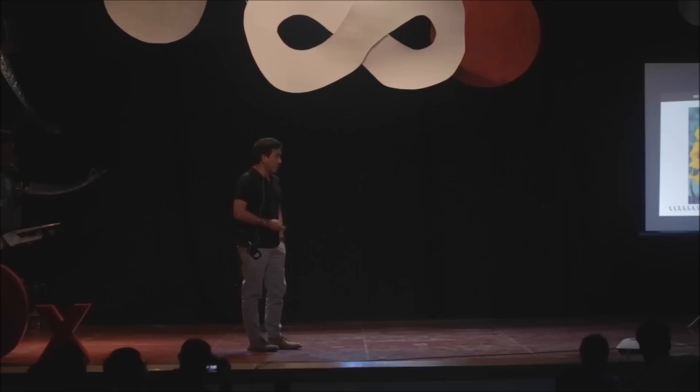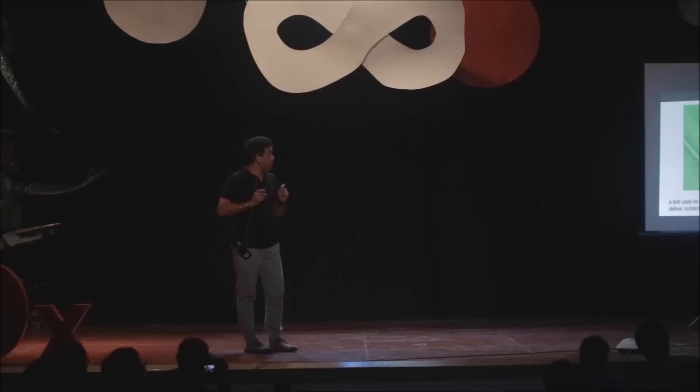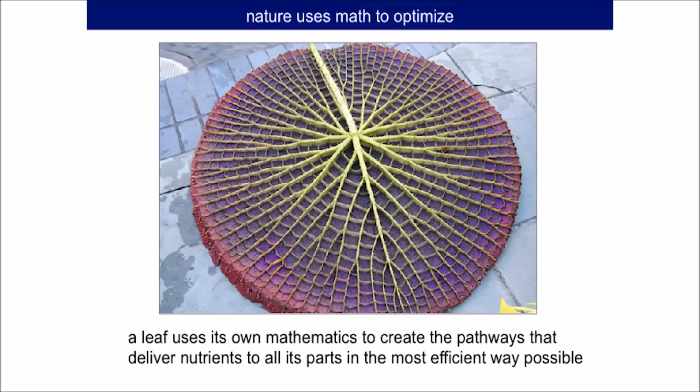This looks very disordered. As I said, mathematics is also about the order in disorder. This ordinary leaf - the web of pathways is nature's most efficient way to deliver nutrients to every part of the leaf. So we're talking about optimization. I couldn't resist showing this wonderful picture of a lotus leaf. That's the mathematics of nature.